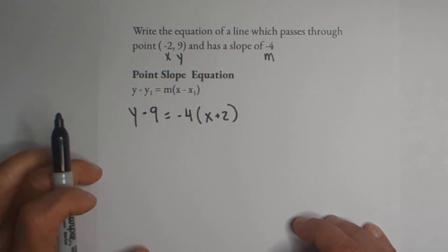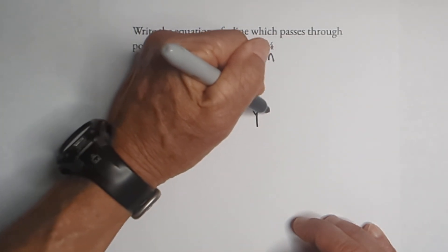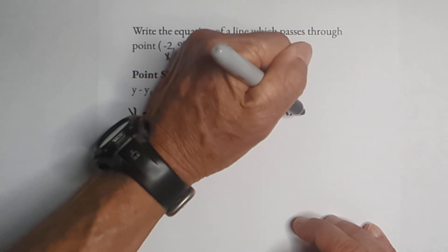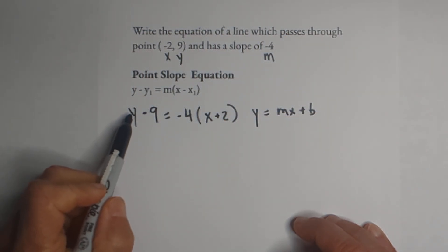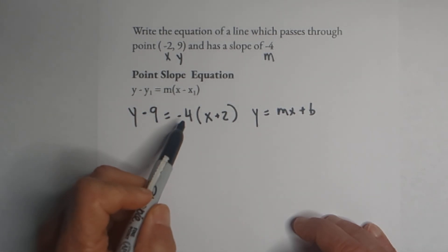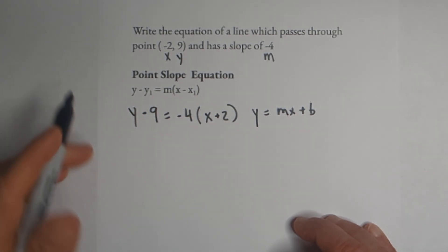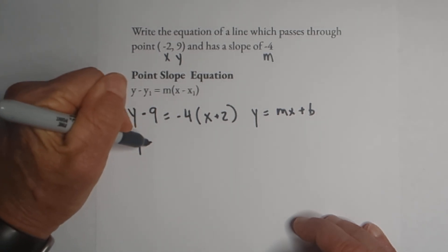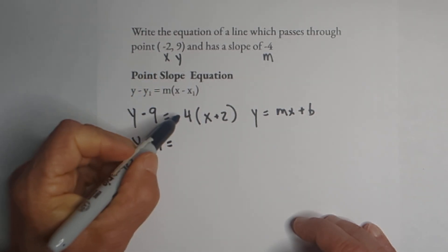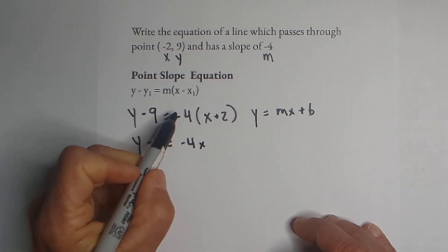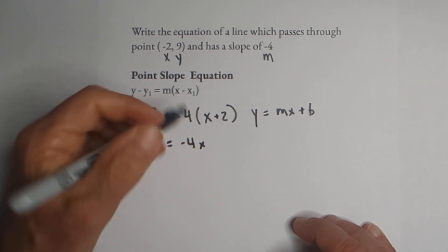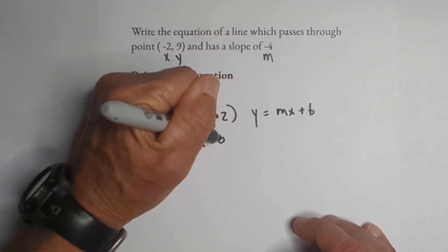So now let's put it in slope-intercept form, which is y = mx + b. In order to do that, we need to isolate y by itself. First we need to distribute the four. We're going to have y - 9 = -4 times x is -4x, and -4 times positive two becomes -8.